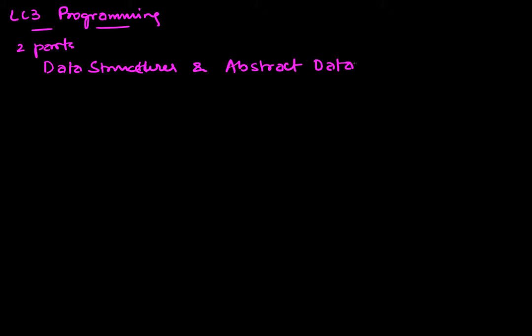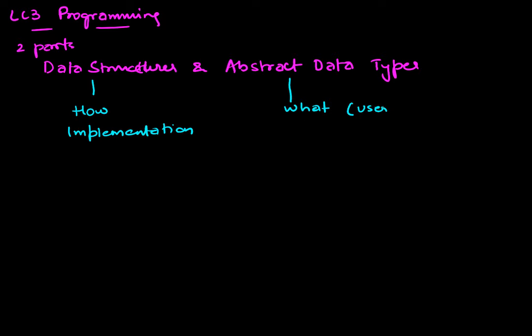These are two terms used often in computer science. I want to make a clear distinction between what a data structure is and what an abstract data type is. When looking at data from an implementation standpoint, you're looking at the 'how' of things — that's when we talk about data structures. When we look at the 'what' of things, from a user standpoint, we are looking at an abstract data type.